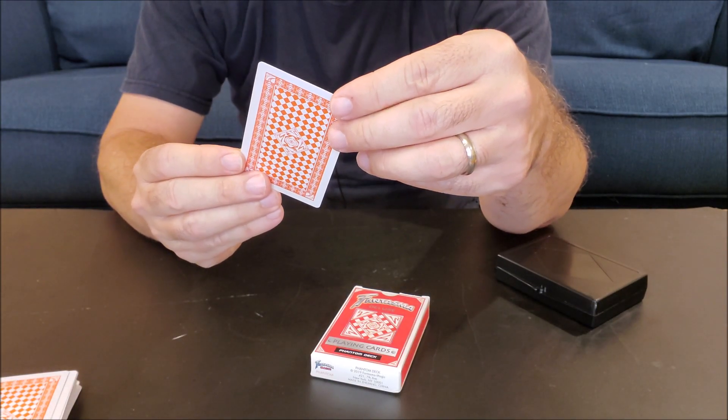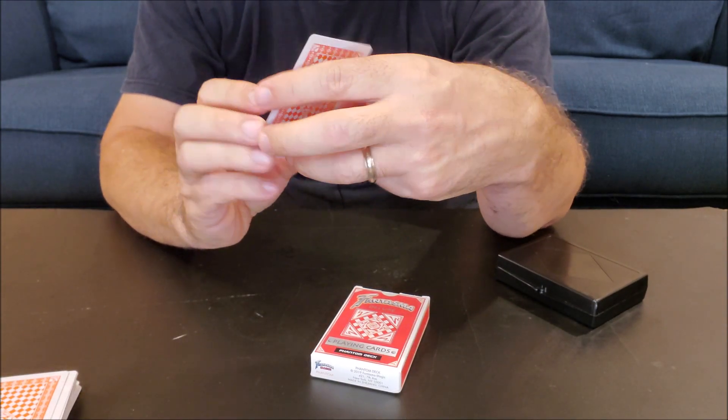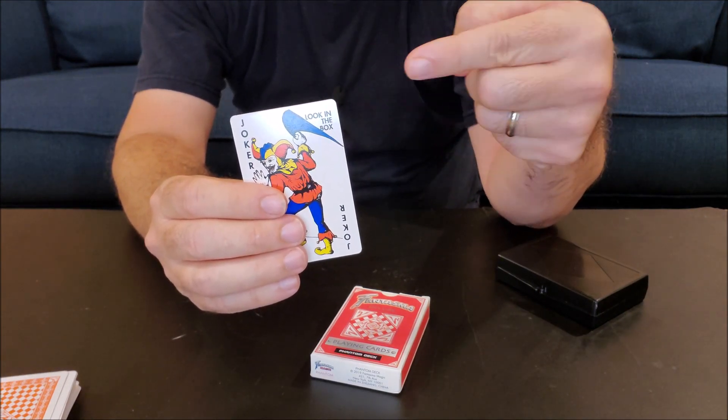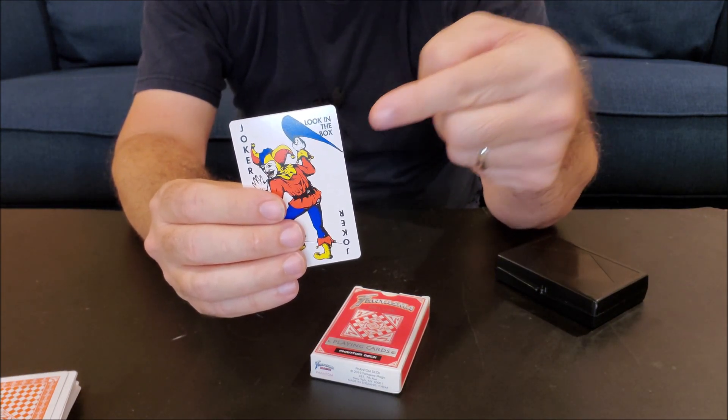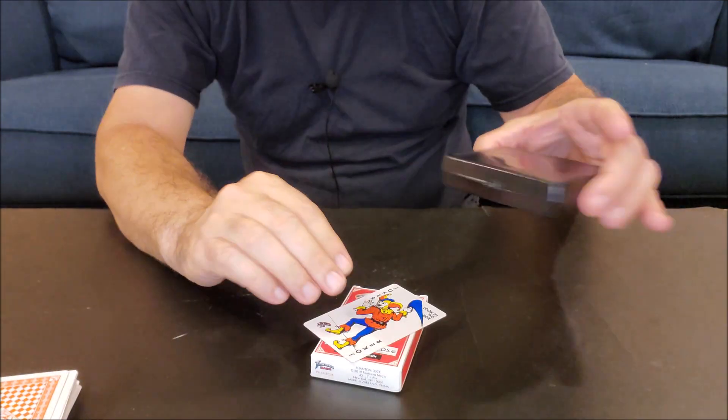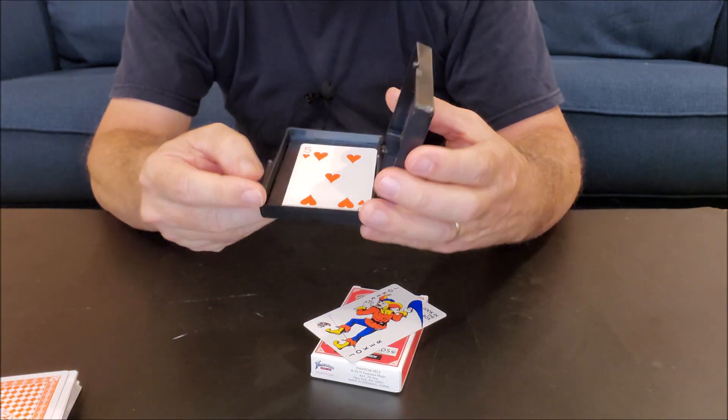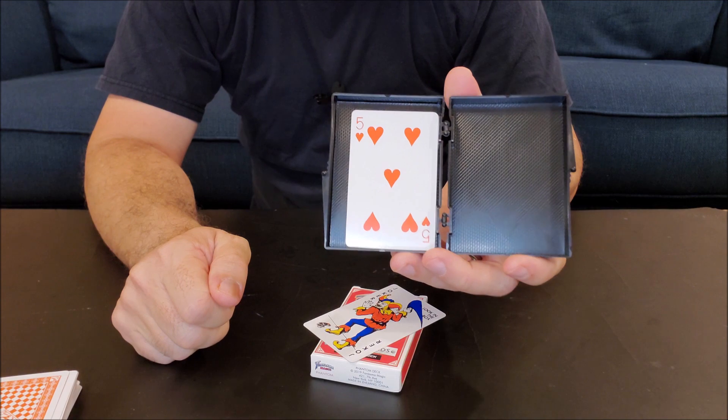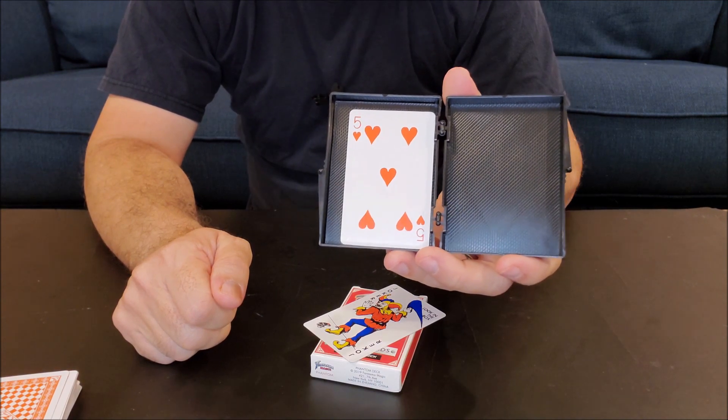Well actually, it's not not the joker. It's actually what it says right here. Look in the box. Look in the box. And I mean this box right here. You can actually hear something in there. If I open it back up, this was empty, but now it has your card in it. The five of hearts.